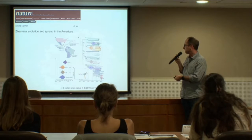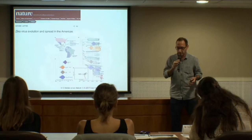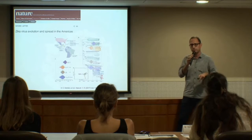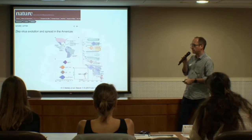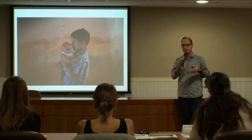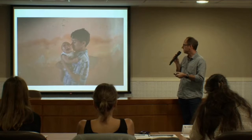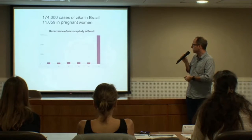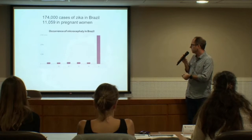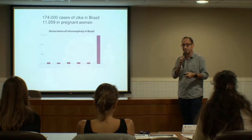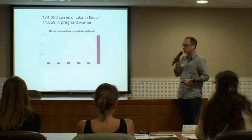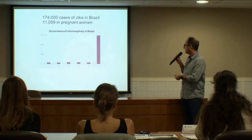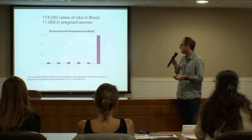After it arrived in Brazil and spread to other countries during the last outbreak, we all know what happened. A recently published paper, including some folks from our institute, showed the evolution of the Zika virus and how it spread in the Americas. When it arrived in Brazil, it was very scary — people didn't know exactly what was going on. It was associated with microcephaly. We had almost 200,000 cases of Zika in Brazil, 11,000 cases of infected pregnant women, and an increased number of almost 3,000 cases of microcephaly.